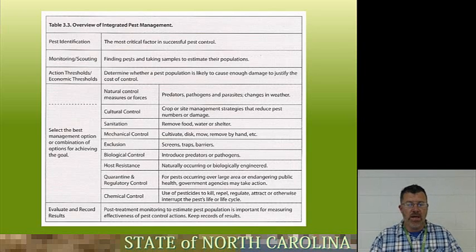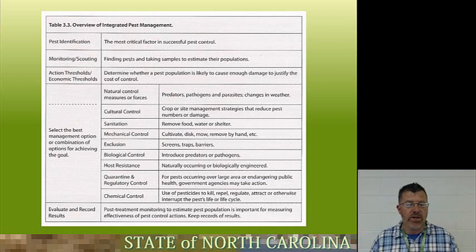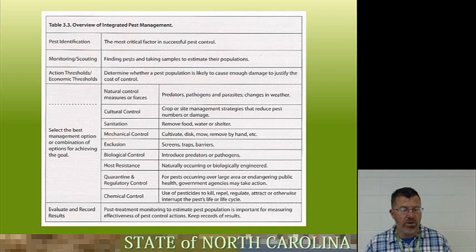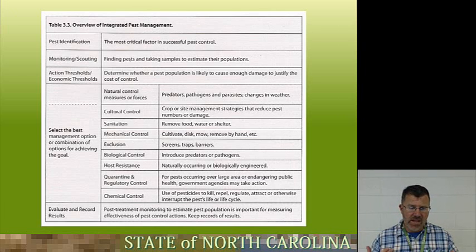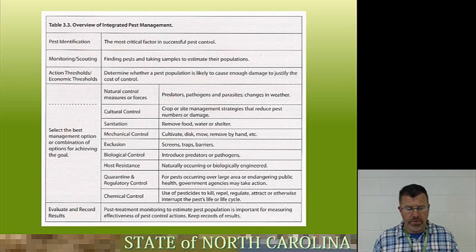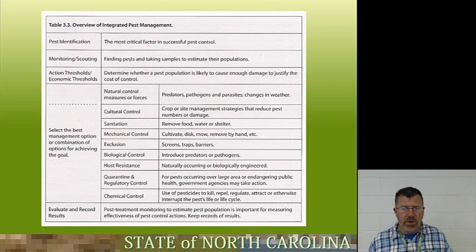Last but not least, chemical control — the application of pesticides. Use of pesticides will either kill, repel, regulate, attract, or otherwise interrupt the pest's life or life cycle. Evaluate and record the results: post-treatment monitoring to estimate the pest population is important for measuring the effectiveness of pest control actions. Keep records of the results so you can always look back over them from year to year.